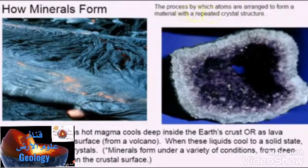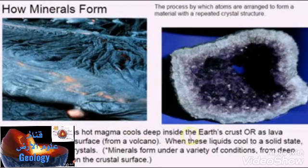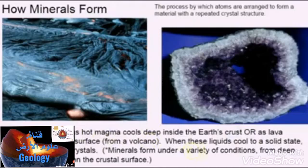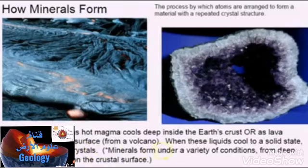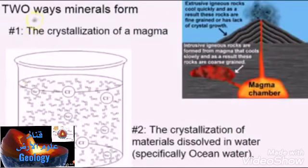Crystallization is the process by which atoms are arranged to form a mineral or any material with a repeated crystal structure. Minerals can form as hot magma cools deep inside the earth's crust, or as lava hardens on the earth's surface — such as from a volcano. When these liquids cool to a solid state, they form mineral crystals, under a variety of conditions from deep inside the earth to on the surface.